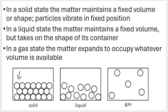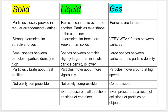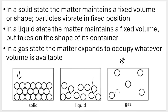In a liquid state, the matter still maintains a fixed volume but it takes on the shape of its container; the particles move slightly faster and they are further apart. In a gas, the matter expands to occupy whatever the volume is. We also learned a table that compares the three different states of matter.